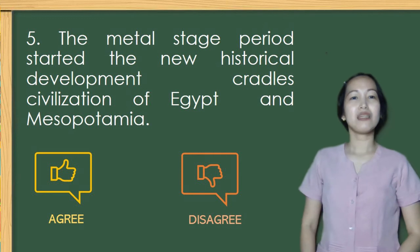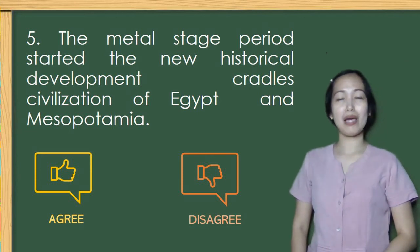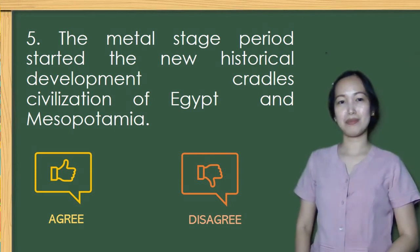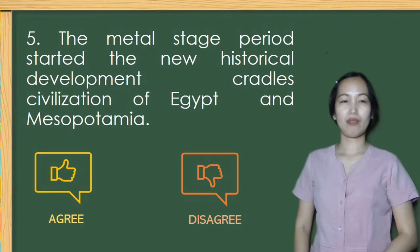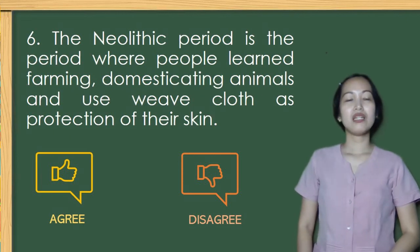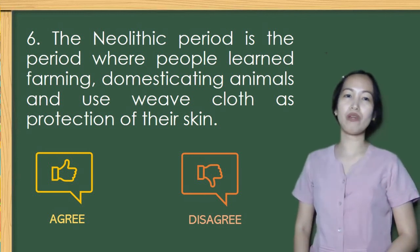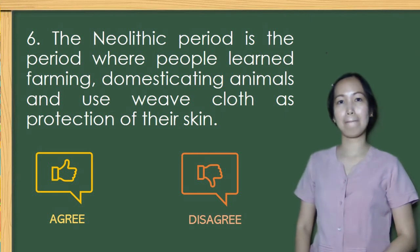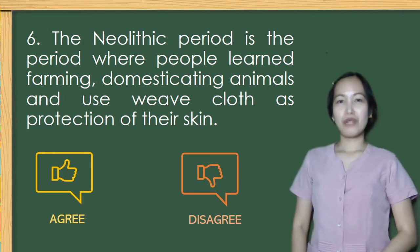Number 5: The Metal Age period started the new historical development — the cradle civilizations of Egypt and Mesopotamia. The correct answer is agree. Number 6: The Neolithic period is the period where people learned farming, domesticating animals, and used leaf cloth as protection for their skin. The correct answer is agree.